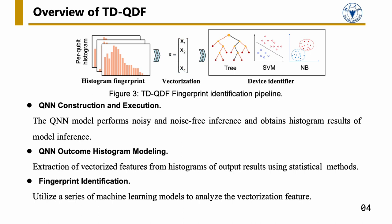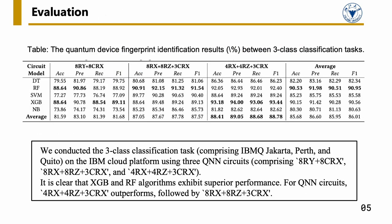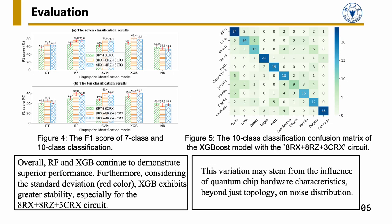We conducted a three-class classification task on the IBM cloud platform using three QN in circuits. We also conduct seven-class and ten-class quantum device fingerprint identifications, as shown in figure 4. Furthermore, to provide deep insights, we compute the confusion matrix of the XGB model for the ten-class classification, as illustrated in figure 5.